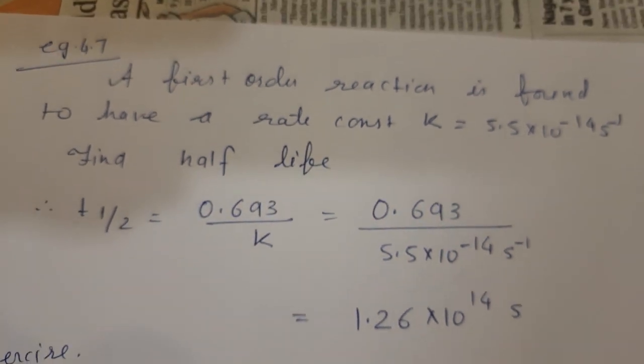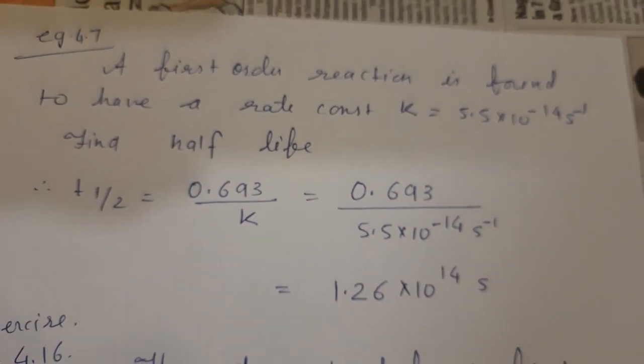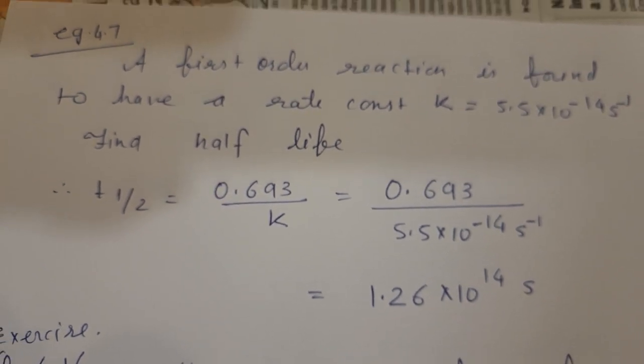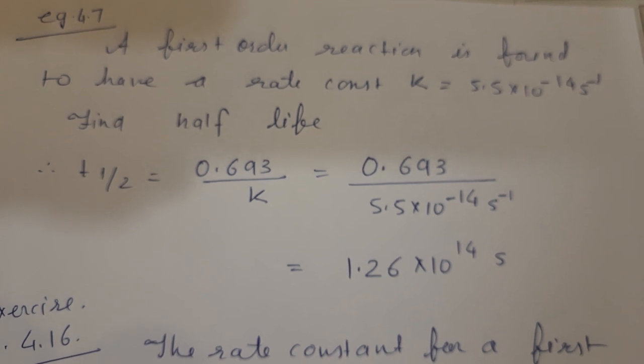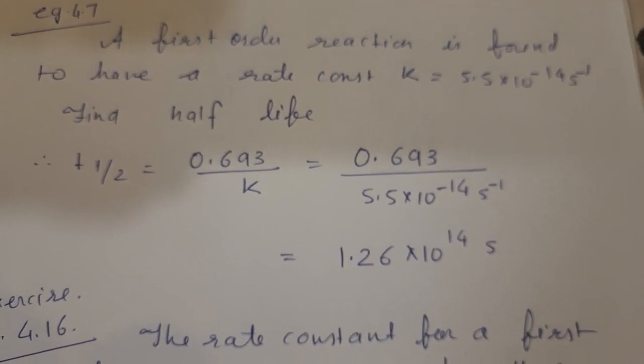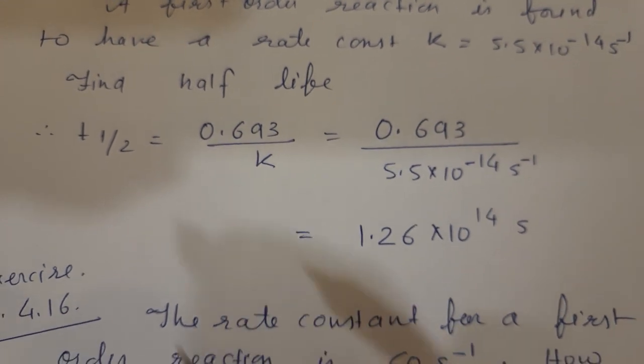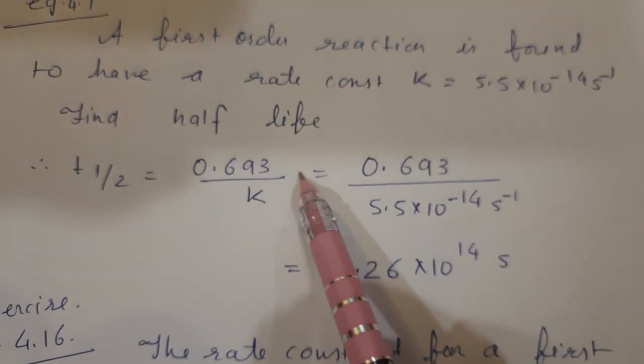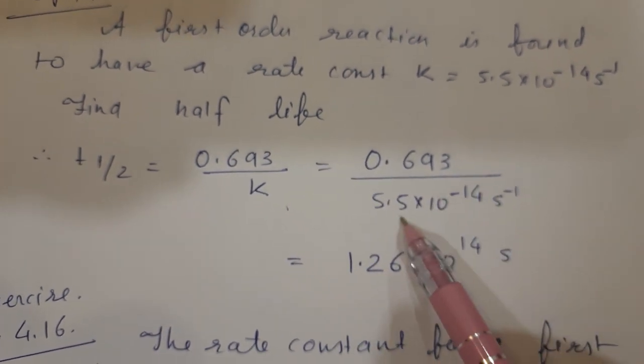Now I'll show you example 4.7 solved in our book. A first-order reaction is found to have a rate constant k equals 5.5 times 10 to the power minus 14 second inverse. Find the half-life. So t half equals 0.693 upon k, which is 0.693 divided by 5.5 times 10 to the minus 14.